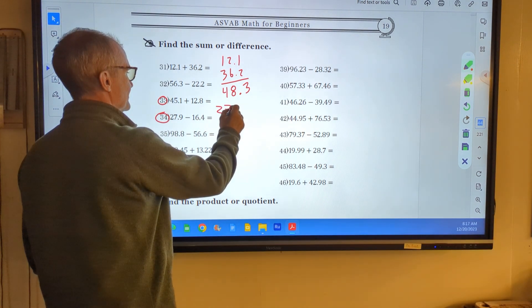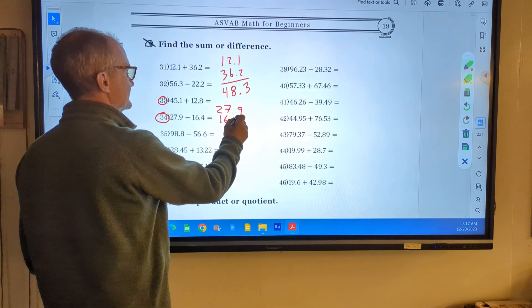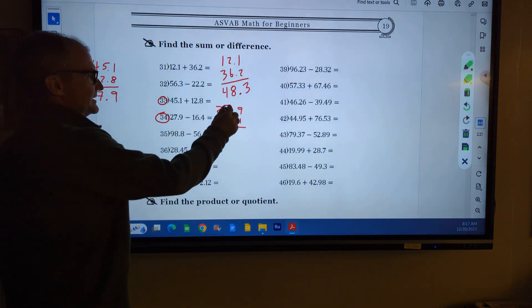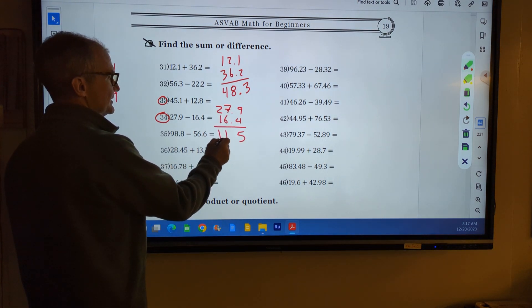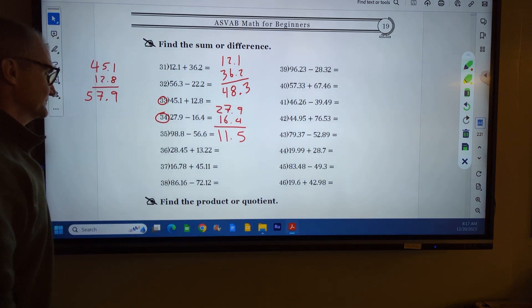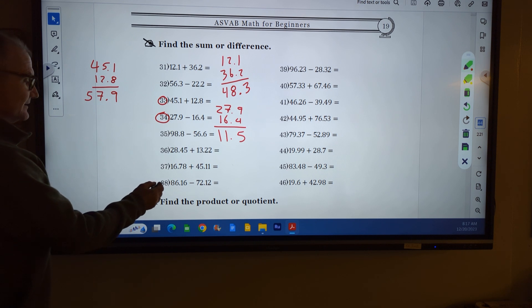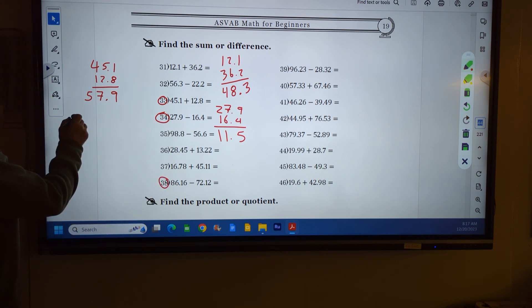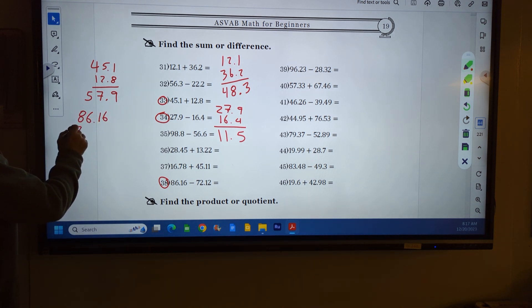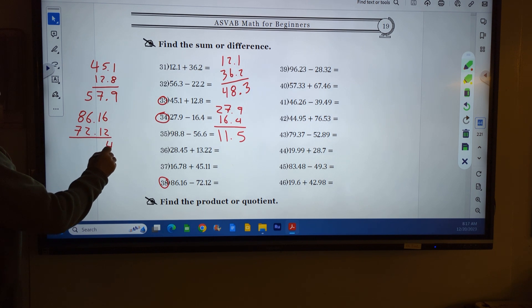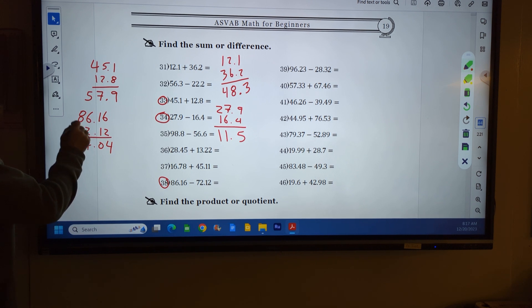Number 34, subtraction: 27.9 minus 16.4. Decimal place is lined up. 9 minus 4 is 5, 7 minus 6 is 1, 2 minus 1 is 1. Decimal place comes straight down. Number 38, getting a little more complex: 86.16 minus 72.12. Decimal place is lined up. 6 minus 2 is 4, 1 minus 1 is 0. Decimal place. 6 minus 2 is 4, 8 minus 7 is 1. 14.04.